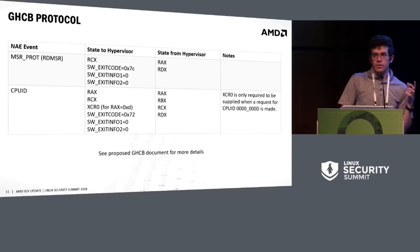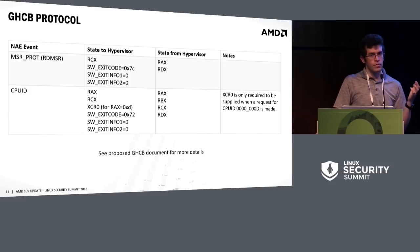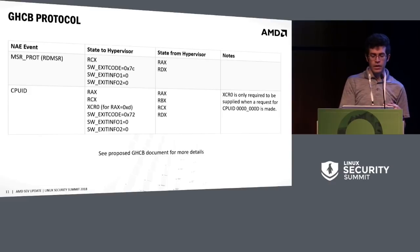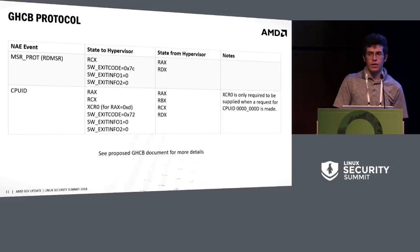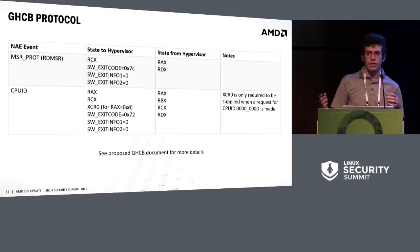The specification contains entries for each exception type defining how the protocol works. For instance, if the guest does a read MSR instruction, it generates this exception, and the guest is expected to set fields in the GHCB structure — indicating which MSR to read via the RCX value — and in return the hypervisor supplies RAX and RDX. Similarly for CPUID. One way to think of this is it's basically a sparsely populated register state structure — only the values actually needed are supplied to the hypervisor.